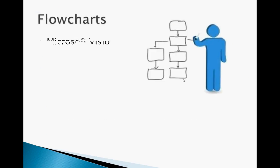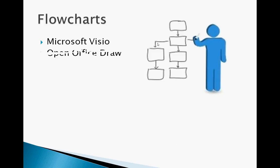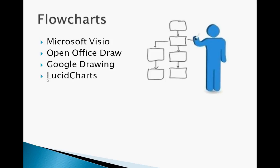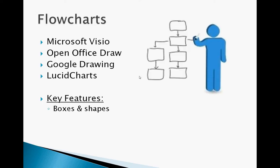Flowcharts are used when you want to draw a diagram to explain how a process works or explain an idea. The most commonly used in offices is Microsoft Visio. OpenOffice has one called Draw, and Google has Google Drawing. I also found a great online one called Lucidcharts. Key features include using boxes and shapes to draw out ideas, formatting text with bold, italics, and different fonts, drawing lines to connect boxes, and adding backgrounds to make your flowchart look good.